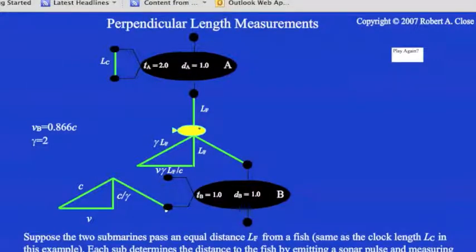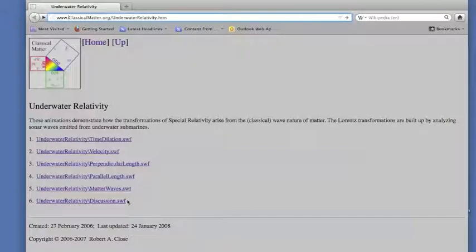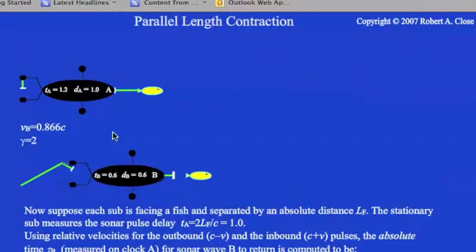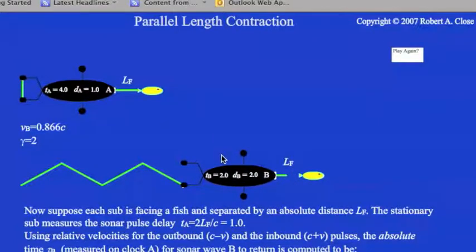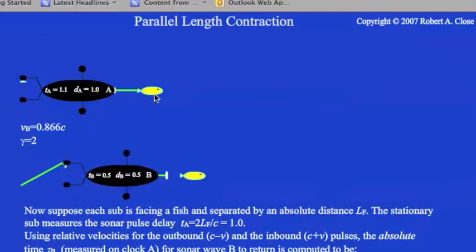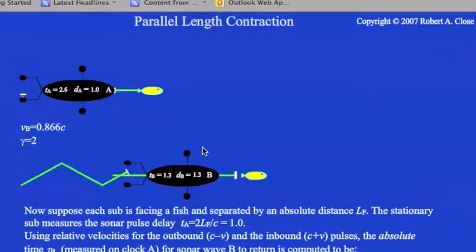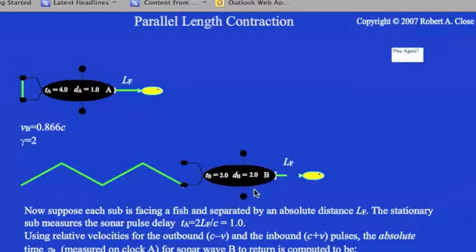Now let's look at length measurements in the same direction as the motion. In this animation, the fish now is swimming in front of the submarine. And it's keeping the same distance for both the moving sub and the stationary sub. And the stationary sub would say that that distance is one unit. It takes one tick of the clock for the wave to come back. And in the case of the moving sub, it takes two ticks of his clock, which of course is four ticks of the stationary clock. But according to him, the distance is two units.